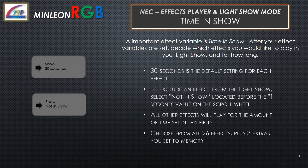Time in show. An important effect variable is time in show. After your effect variables are set, decide which effects you would like to play in your light show and for how long. 30 seconds is the default setting for each effect. To exclude an effect from the light show, select Not in Show, located before the 1-second value on the scroll wheel. All other effects will play for the amount of time set in this field. Choose from all 26 effects plus the three extras saved to memory.